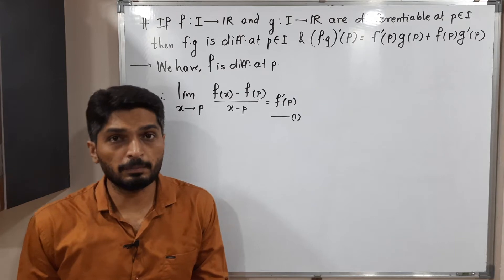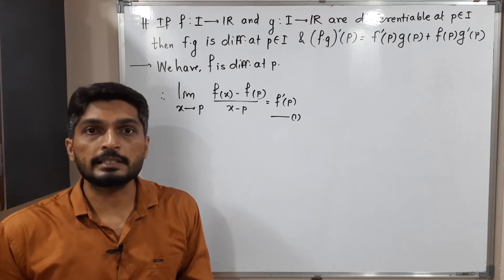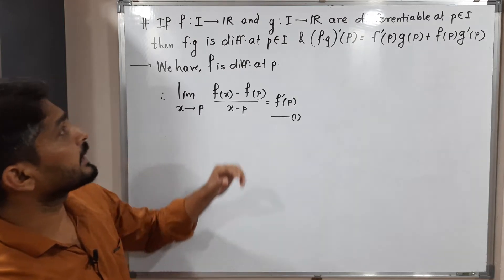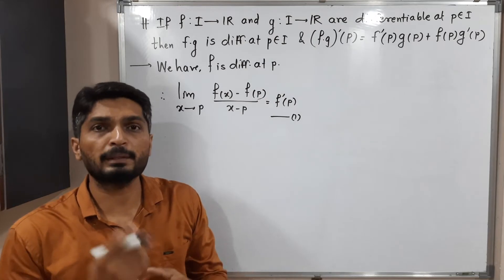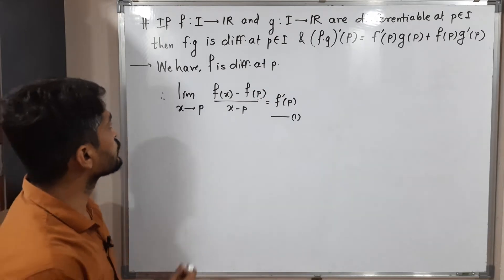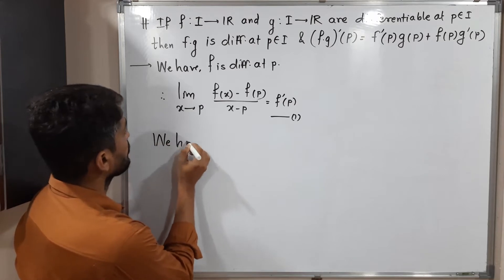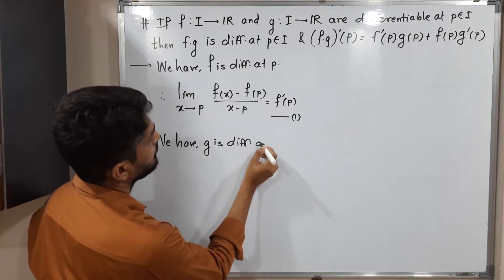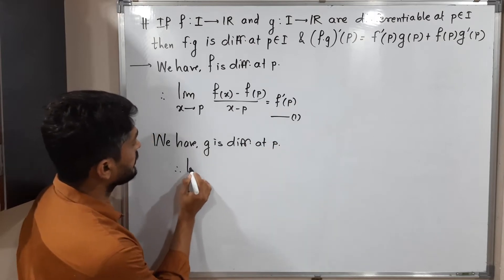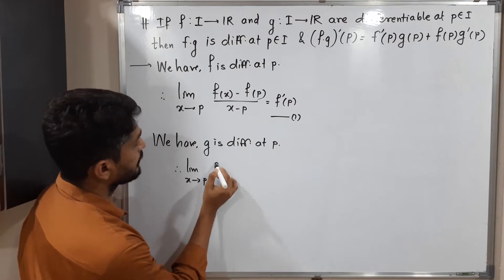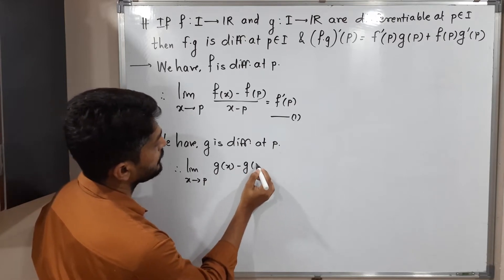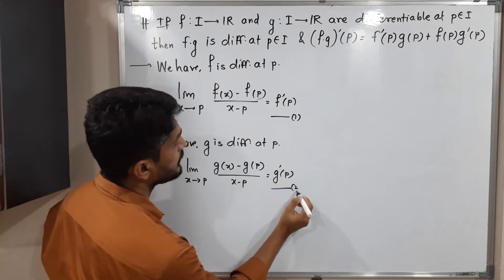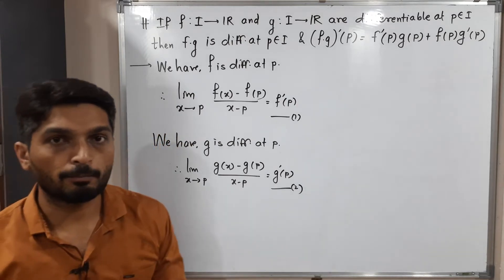So f is differentiable at p means this limit exists and its value is f dash of p. Similarly, g is also differentiable at point p. By the same definition: limit x tends to p of [g(x) minus g(p)] upon [x minus p] equals g dash of p. I am calling this equation number two.